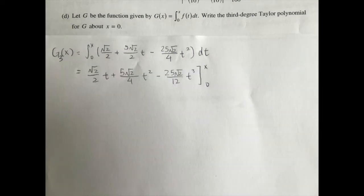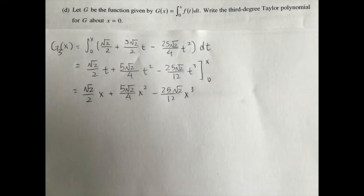From there, integrate normally. Your answer will be g of x equals square root of 2 over 2 times x plus 5 square root of 2 over 4 times x squared minus 25 square root of 2 over 12 times x cubed.